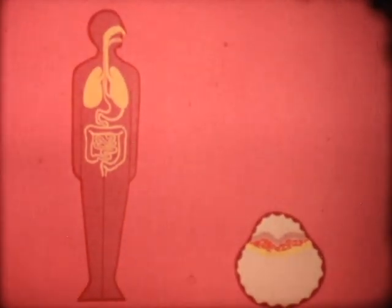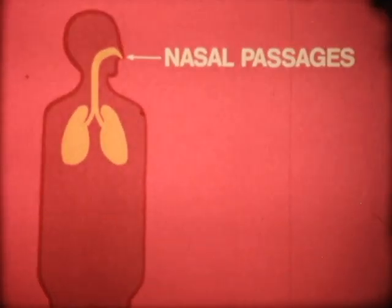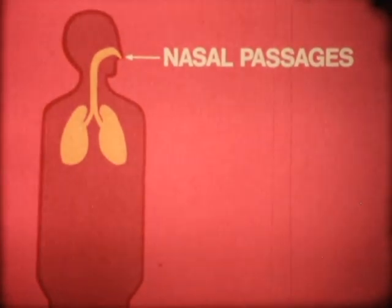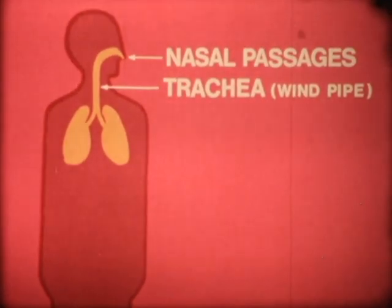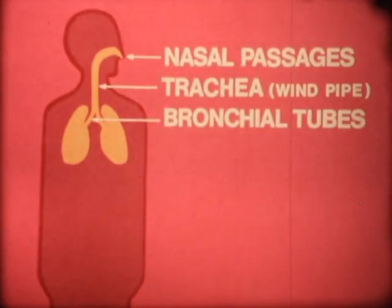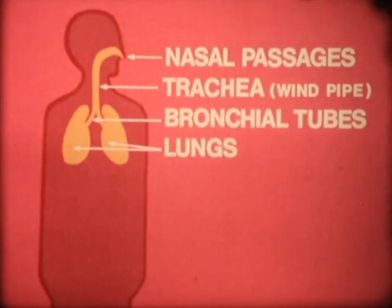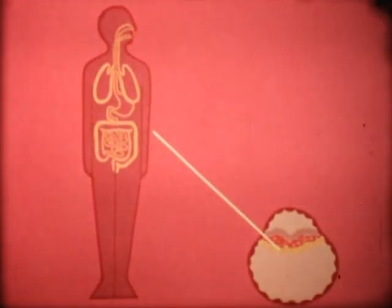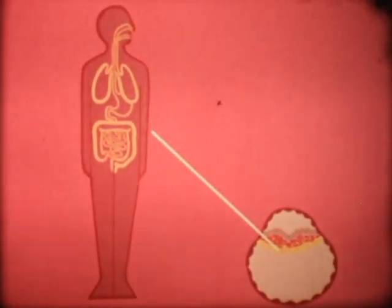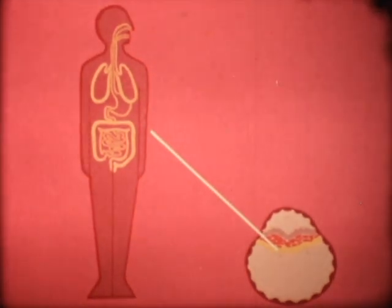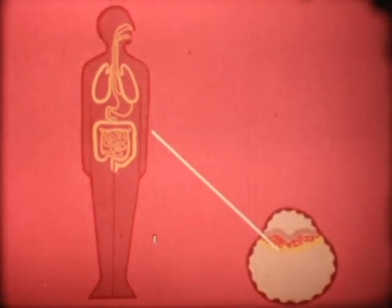The inner layer of cells also makes the lining of the respiratory system. The respiratory system consists of the nasal passages through which air is breathed into the trachea or windpipe, through the bronchial tubes and into and out of the lungs. So the inner layer of cells makes those parts of the body concerned with feeding, the alimentary canal, and with breathing and respiration, the respiratory system.